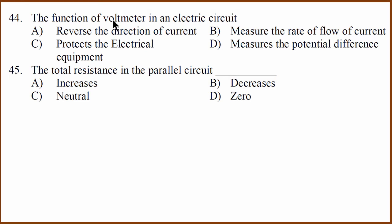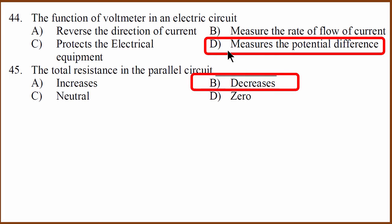Next, again simple question. Voltmeter measures the potential difference. That's what voltmeter does. Next, total resistance in parallel circuit. What happens when you connect resistance in parallel? It decreases. When you connect resistance in series, it increases. But when you connect them in parallel, it decreases.